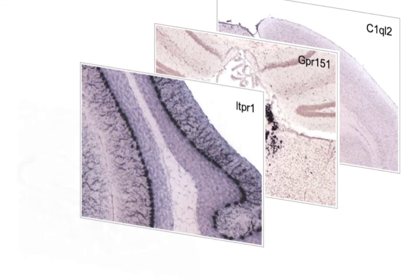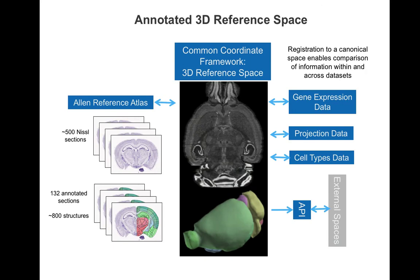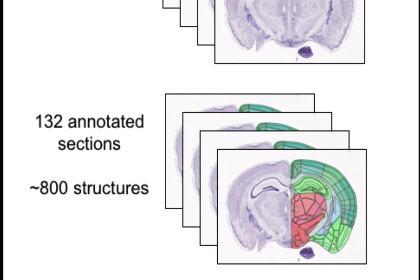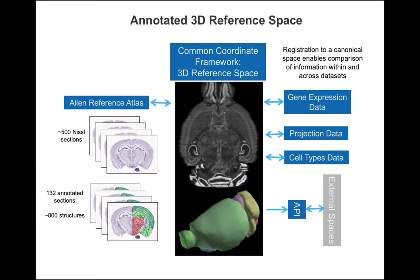The Allen Institute created their first reference space from a single mouse brain, which was sectioned into about 525 micron sections. On every fourth section, anatomists drew structures on one hemisphere based on the cytoarchitecture. Those two-dimensional images were warped into a three-dimensional space, and in 2005, this static atlas was displayed alongside the gene expression images, allowing for breakthroughs in neuroanatomy and gene expression to be married.